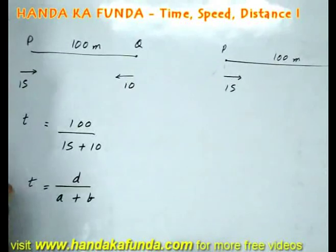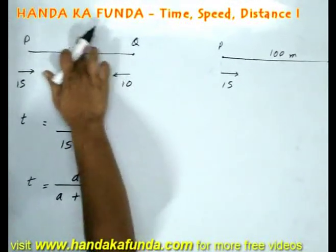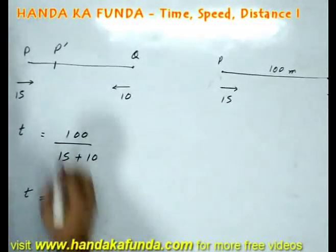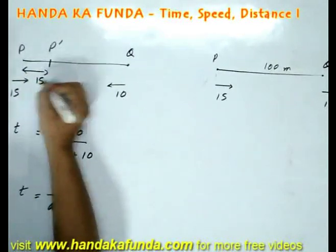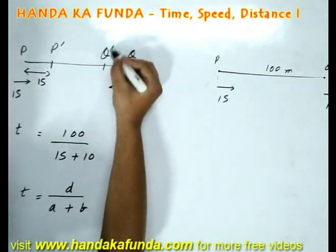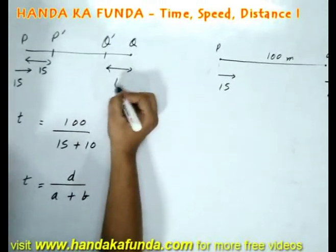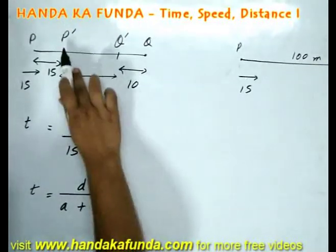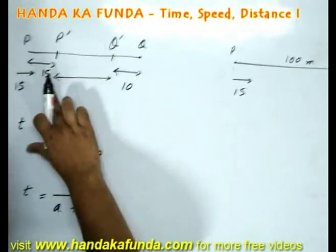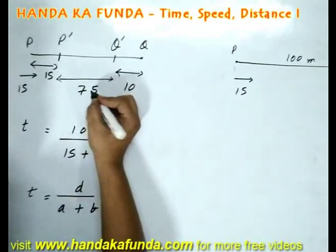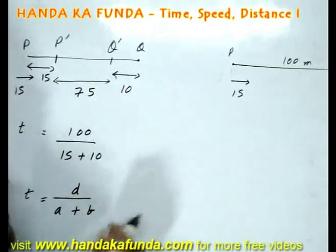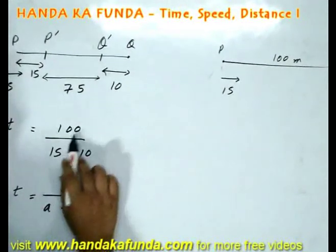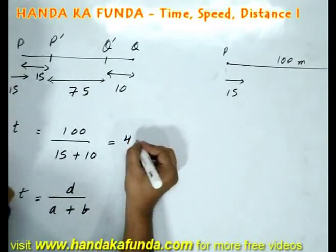But it is also important to understand why it happens. Think about it. The distance initially is 100 meters. One second later, what will be the case? The first person would have moved to P' or he would have covered 15 meters. The second person would have moved to a point Q' and he would have covered 10 meters. So, the new distance between the two bodies, which was initially PQ or 100 meters, would have come down to P'Q', that is 100 minus 15 minus 10 or 75 meters. Which means, the distance between the two bodies is reducing at the rate of 25 meters in one second. So, it will reduce by 100 meters in 100 by 25 or 4 seconds.